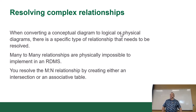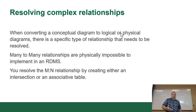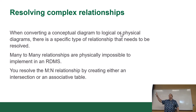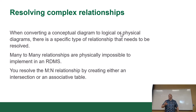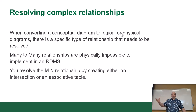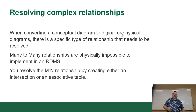Resolving complex relationships. When converting a conceptual diagram to a logical or physical diagram, there's a specific type of relationship that needs to be resolved. Many-to-many relationships are physically impossible to implement in an actual database. They make sense at the conceptual stage where you're thinking about how things are related, but when it's time to apply them physically, I've only seen two database products in my entire career that allow many-to-many in the software — and neither of those products still exist. You resolve a many-to-many relationship by creating an intersection table, also called an associative entity or associative table.